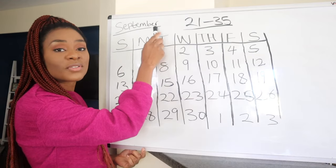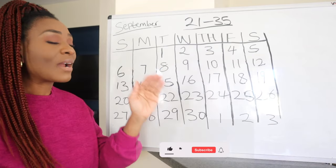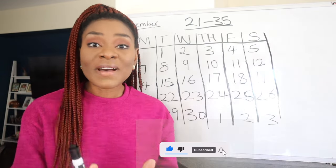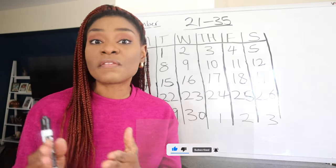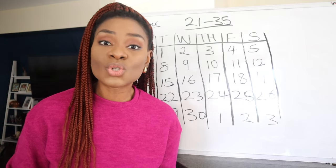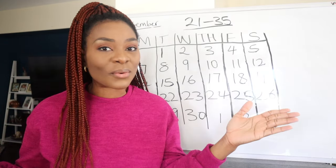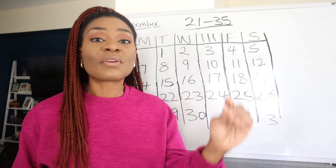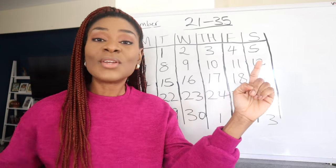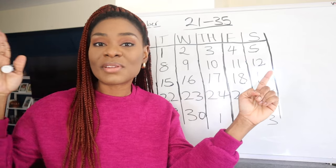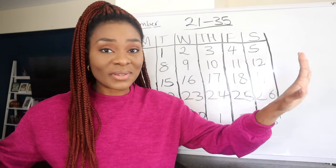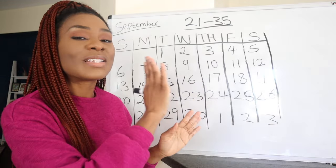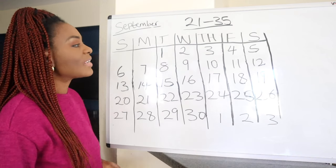We're going to use a method called the calendar reading method. I have my calendar drawn out here and I'll be using the month of September. According to this method, to find your fertile days the first thing you need to know is the length of your cycle. Your menstrual cycle starts from the first day of your period to the day before your next period starts.